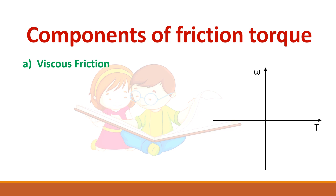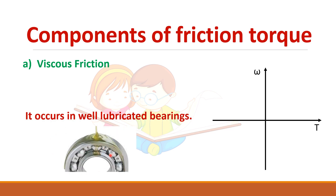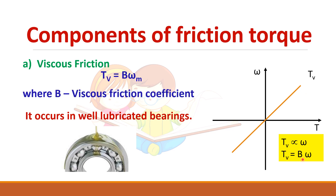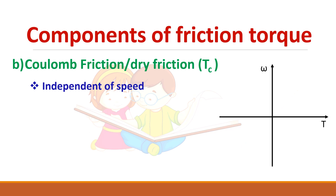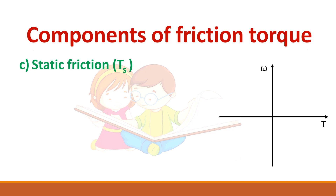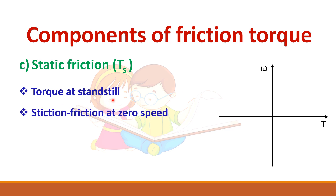Viscous friction occurs in lubricated bearings and is proportional to speed: Tv = B·ω, where B is the coefficient of viscous friction. Coulomb or dry friction is independent of speed and has a constant value. Static friction is the friction at standstill — at near-zero speed some torque exists, and once the system is in motion this friction reduces.